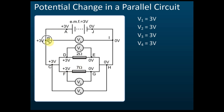So if you put your voltmeter here, B to I — V3 — you will get 3 volts. If you put the voltmeter here, D to E, you still get 3 volts: positive 3 to zero. V2 is still 3 volts — 3 to zero. If you connect C to H, you will still get 3 volts, even though the resistance is not the same — 2 ohms versus 7 ohms.